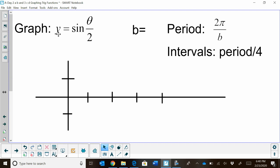So we're going to try to graph y equals sine of theta, which is also an x, the unknown, the angle, divided by 2. So what we have to think is, what is b? Well, b is really just a fraction one-half because the angle's being multiplied by one-half.